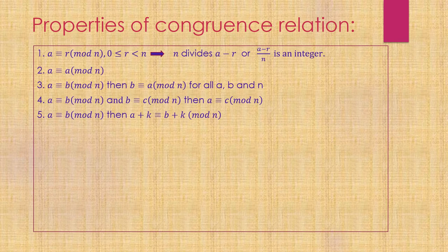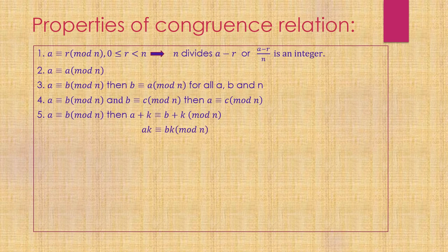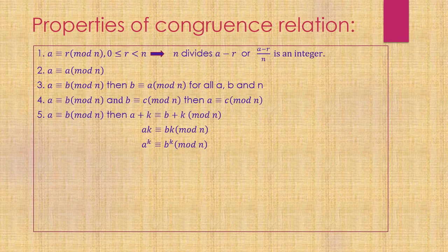Now, these are some special properties. If a is congruent to b modulo n, then adding k to both sides preserves the relation: a plus k is congruent to b plus k modulo n. Similarly, ak is congruent to bk modulo n. And a^k is congruent to b^k modulo n. This gives rise to: any function of a is congruent to the same function of b modulo n.